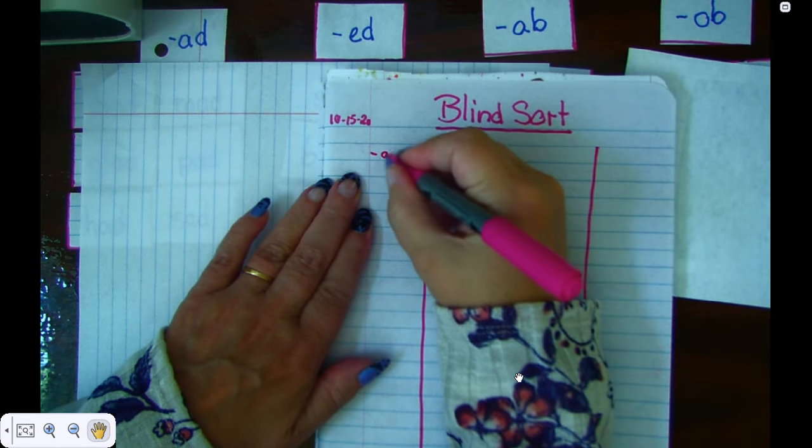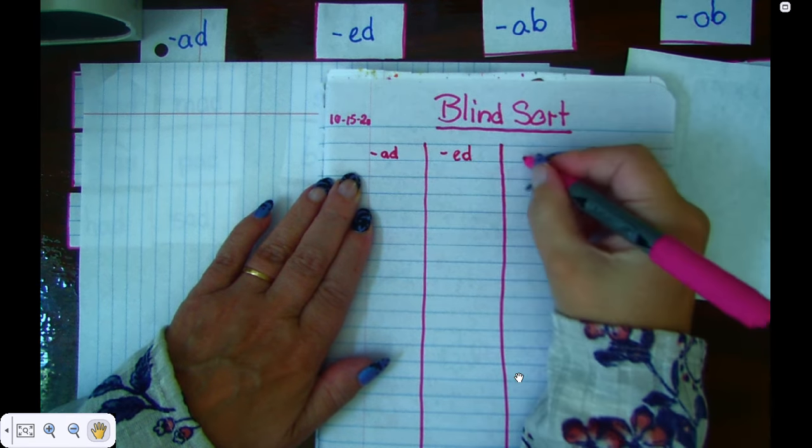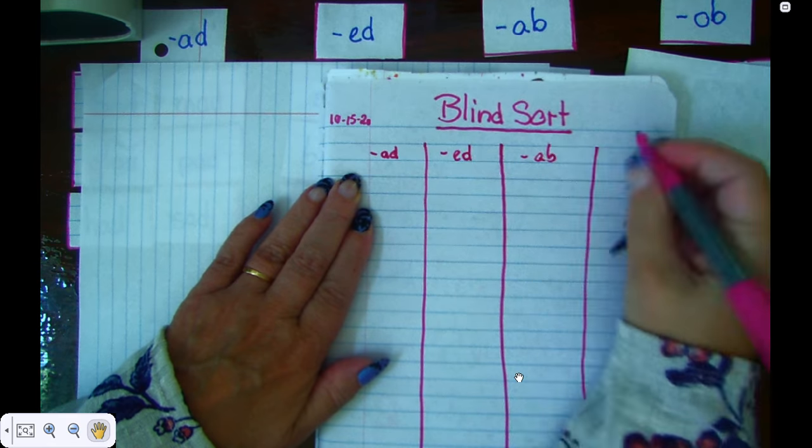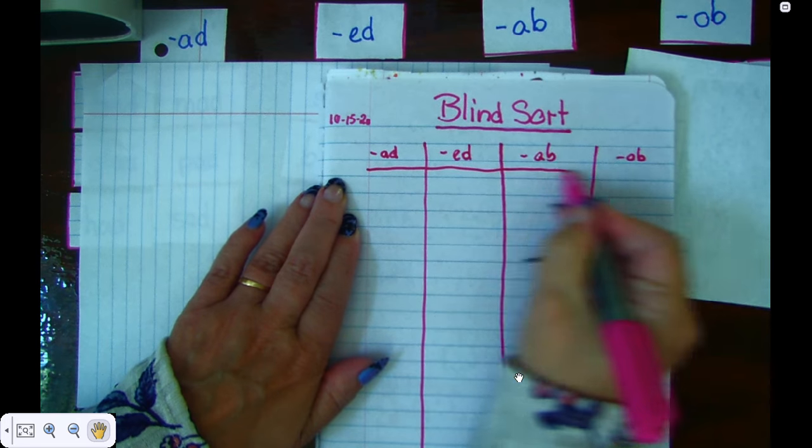And I write my headers: ad, ed, ab, and ob. And then I draw a line underneath it.